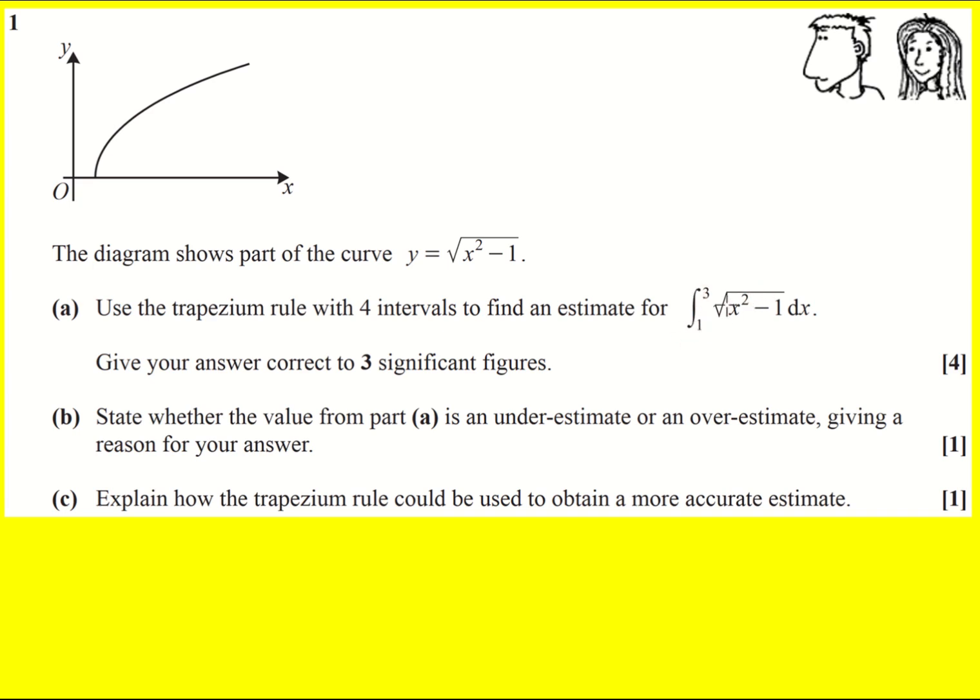Now when x is equal to 1 we're going to get 1 squared minus 1, we're going to get 0. So actually that is the starting point and I'm going to take this one to be x equals 3.